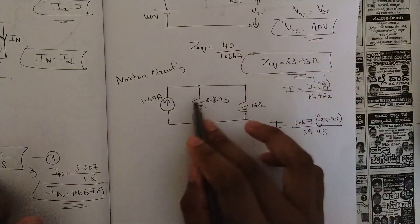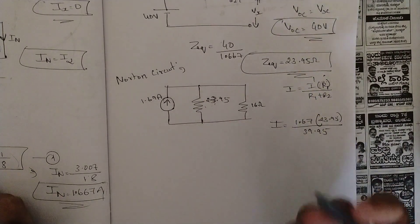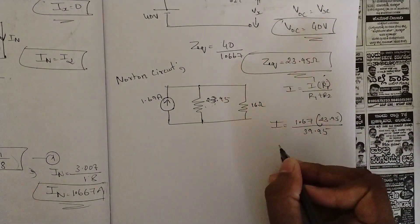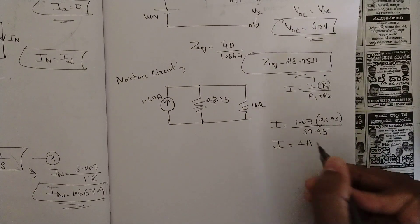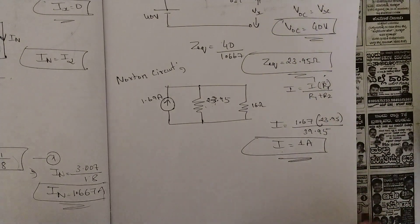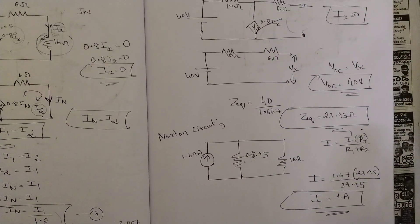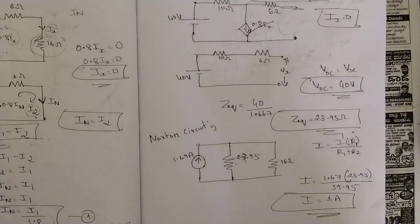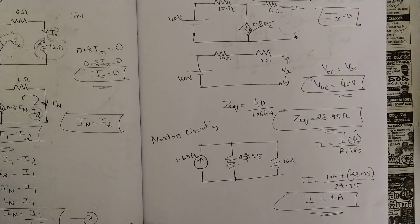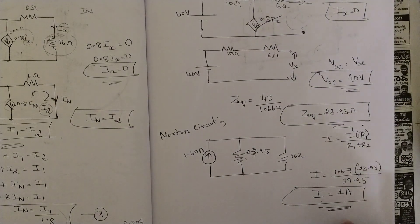Alternatively, you can find the equivalent parallel resistance first and then calculate the current step by step. Either way, the current through the 60-ohm resistor is approximately 1 ampere. This is an important problem related to Norton's theorem. In the next session we will solve two more problems. Please like this video and share this playlist. Thank you.